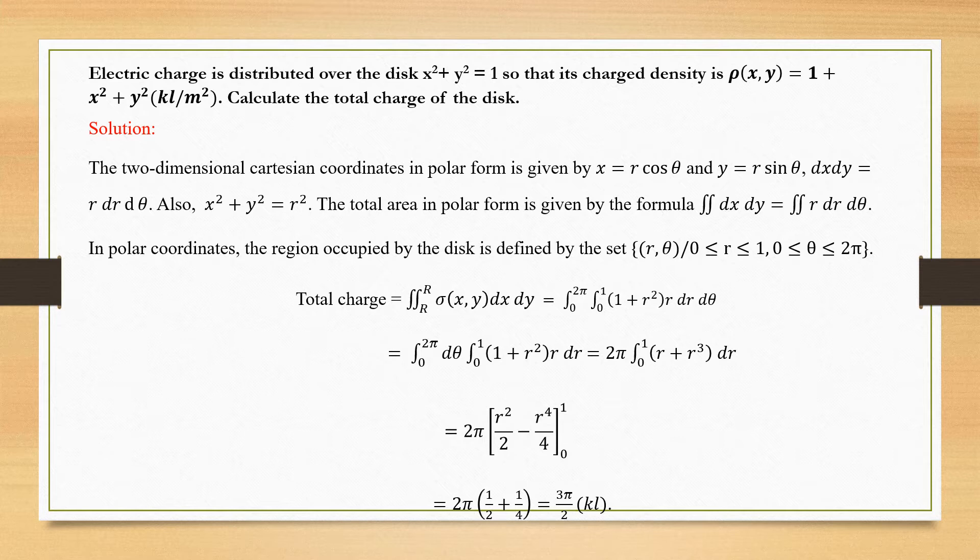Since we know the Cartesian and polar form, this problem might be very simple to handle in polar form. The two-dimensional Cartesian coordinates in polar form are given by x = r·cos θ and y = r·sin θ. Using the Jacobian, we get dx dy = r dr dθ. Also, x² + y² = r².